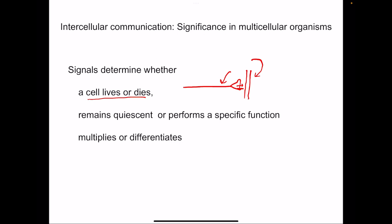Similarly, there might be cells for which death is required. For example, if cells are infected with a virus, these cells release chemicals outside, bringing in the WBCs which cause death of that cell. So signals determine whether a cell lives or dies, or whether it remains quiescent — that is, silent — or performs a specific function.